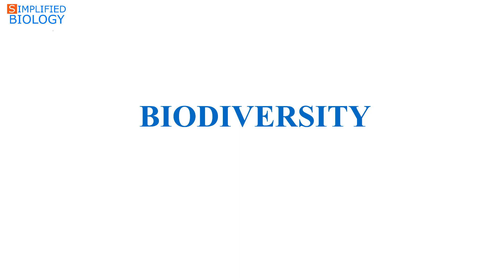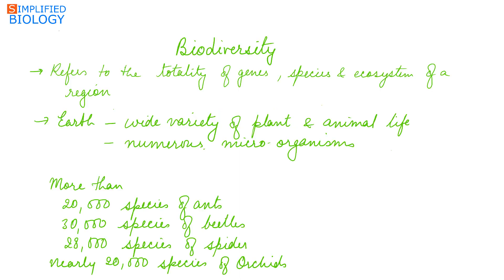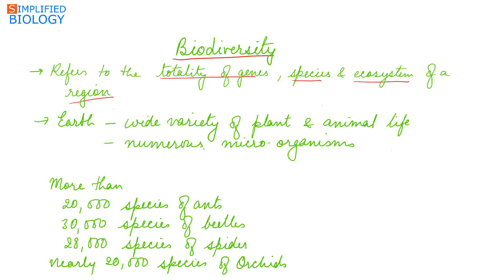Welcome to Simplified Biology. Today's topic is biodiversity. Biodiversity refers to the totality of genes, species, and ecosystems of a region — meaning the sum total of all genes, the different types of species, and the different types of ecosystems of a region.